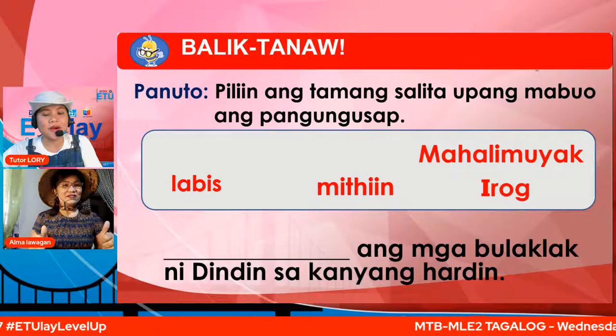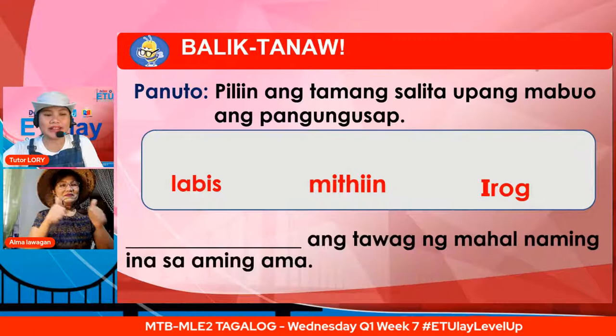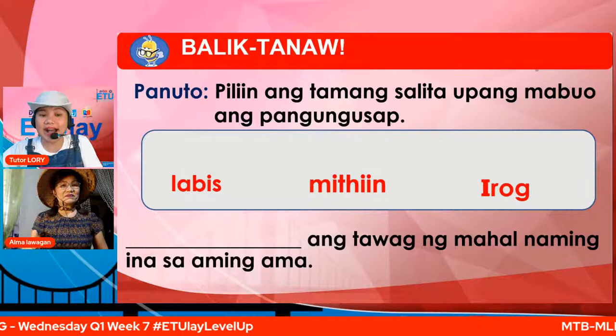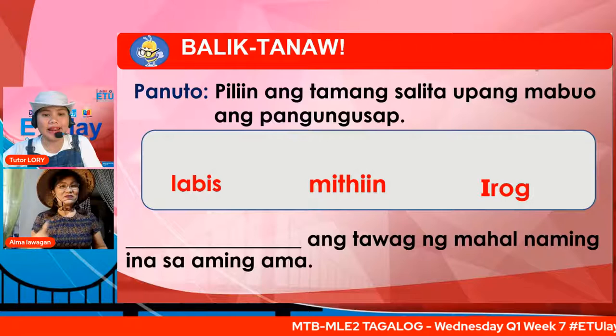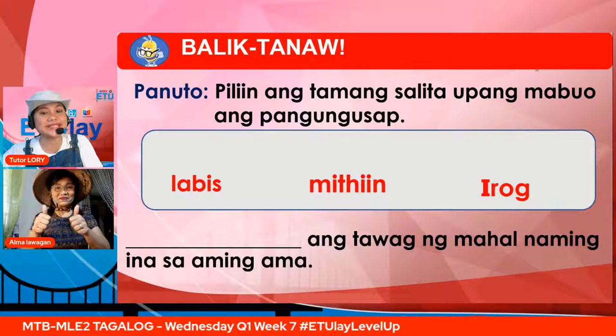Pang-tatlo — patlang ang tawag ng mahal naming ina sa aming ama. Ano kaya ang katumbas ng salitang mahal? Ang tatlong natitira sa ating kahon ay labis, miti, at irog. Ano kaya ang magkatumbas na salita ng mahal? Kung ang sagot mo ay irog, napakahusay!